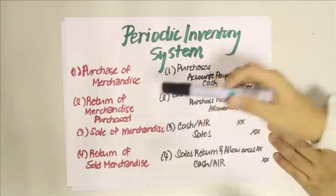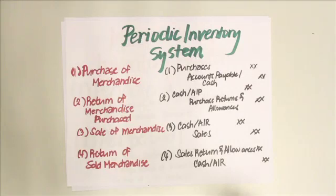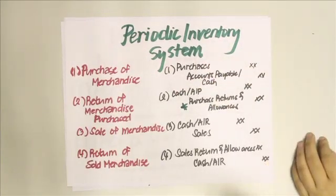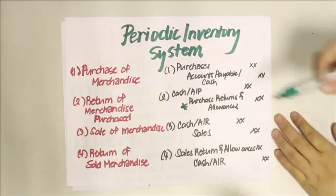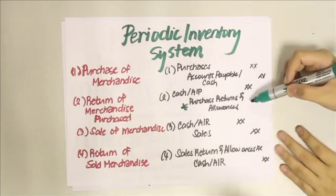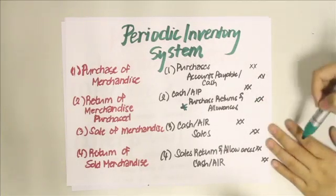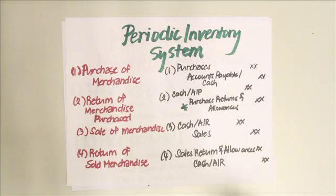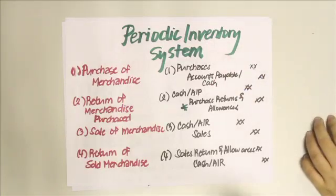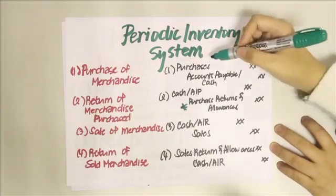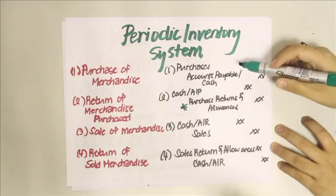For a return of merchandise purchased, you use the purchase returns and allowances account. Since you return the merchandise, you are receiving either cash or a reduction in your accounts payable, so you debit either cash or accounts payable and credit purchase returns and allowances. This is a contra asset account deducted from your purchases account to get net purchases.